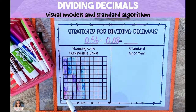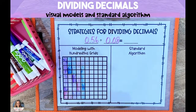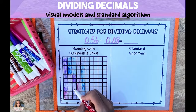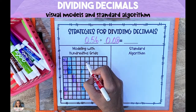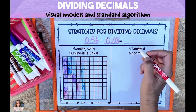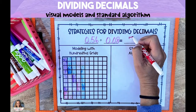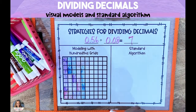Once you've finished creating your groups, you're going to count how many groups you were able to make. Since there are seven groups of 8 hundredths, the answer to 56 hundredths divided by 8 hundredths is seven.